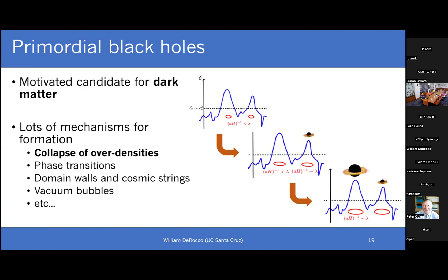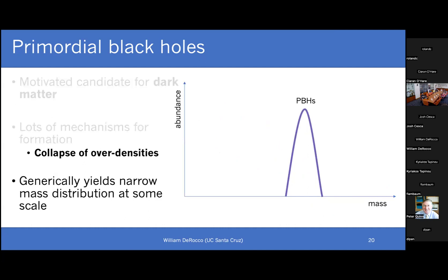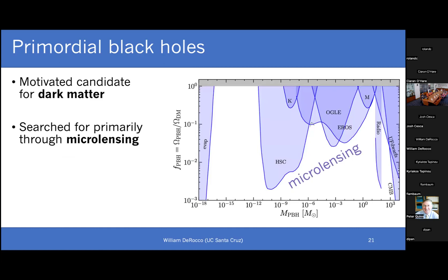The mechanism most people associate with primordial black holes is the collapse of over-densities after inflation. If your inflationary potential has some feature — a divot at a particular scale — the inflaton can sit there and build up energy density at that scale. When that scale re-enters the horizon, it collapses and forms a primordial black hole. One important thing: generically, these formation mechanisms are set by a particular scale, so PBHs are usually predicted to have a narrow distribution around that scale in mass — for example, a log-normal distribution with a narrow width centered at some mass.